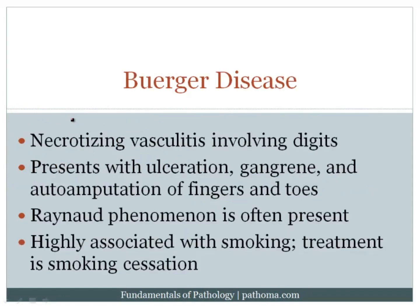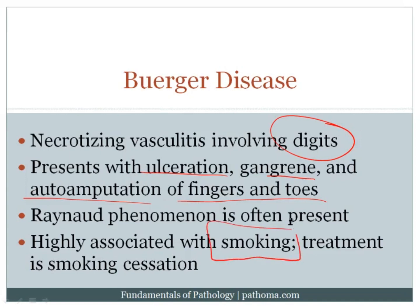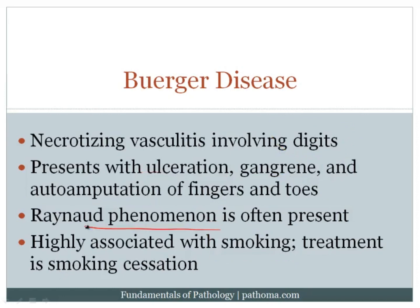Another medium vessel vasculitis is Buerger's disease, a necrotizing vasculitis involving the digits. You classically see ulceration, gangrene, and auto-amputation of the fingers and toes. The highest-yield point is that it is strongly associated with smoking — essentially a smoking disease — and treatment is to stop smoking. Whatever damage has occurred is permanent, but the disorder will no longer progress. These patients often have Raynaud's phenomenon, where vasospasm causes discoloration of the fingers and toes: white as blood supply is cut, then blue as tissue becomes cyanotic, then red when blood supply returns.